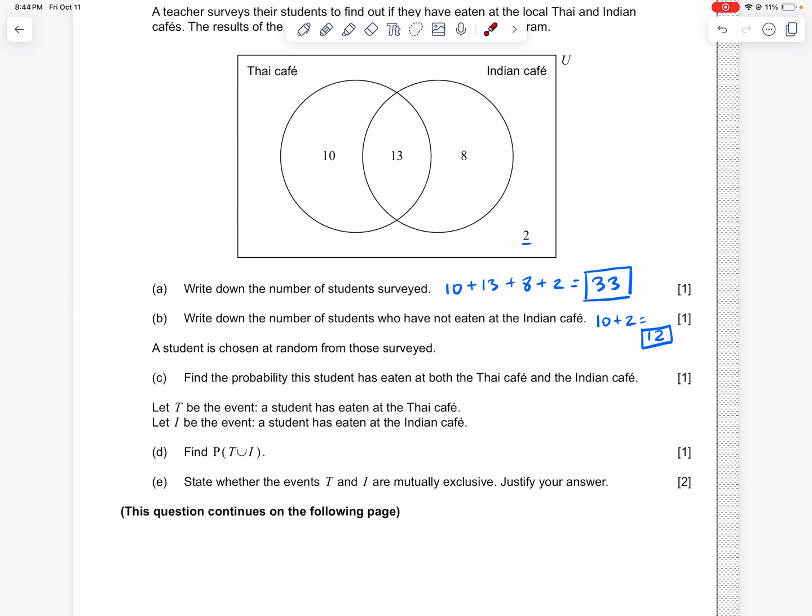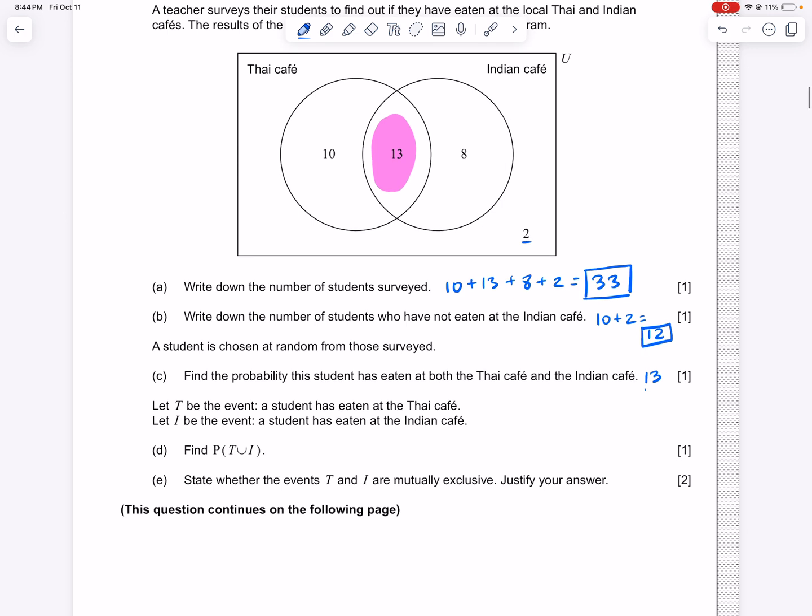So now we need to find the probability that the student has eaten both at the Thai Café and the Indian Café. So when you hear and, that is the intersection, somebody who is in both the Thai Café and the Indian Café. And so there are 13 students in that category. But they're not asking for a number in this question. They're actually asking for a probability. So we have to take that 13 and we have to put it over the total, which we recently found was 33. And that is the probability that you pick somebody who's eaten at both cafés.